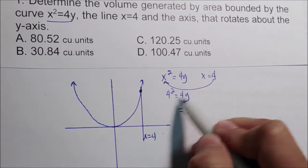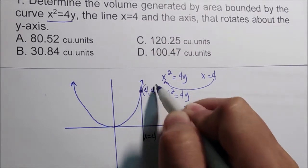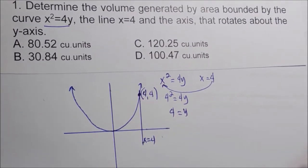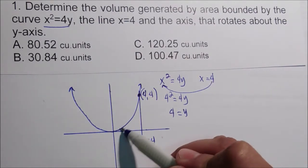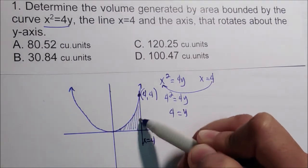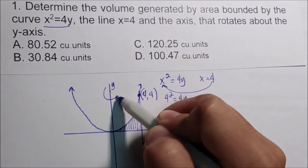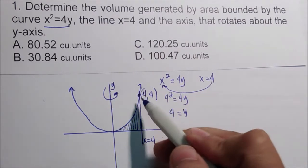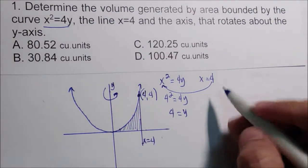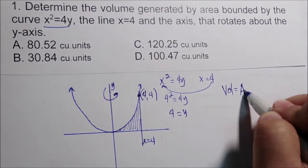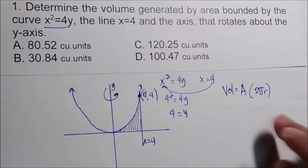So y equals 16 divided by 4 equals 4. The intersection point is (4, 4). We need to determine the volume generated by this bounded area rotating about the y-axis. From our formula, volume equals area times 2πr.